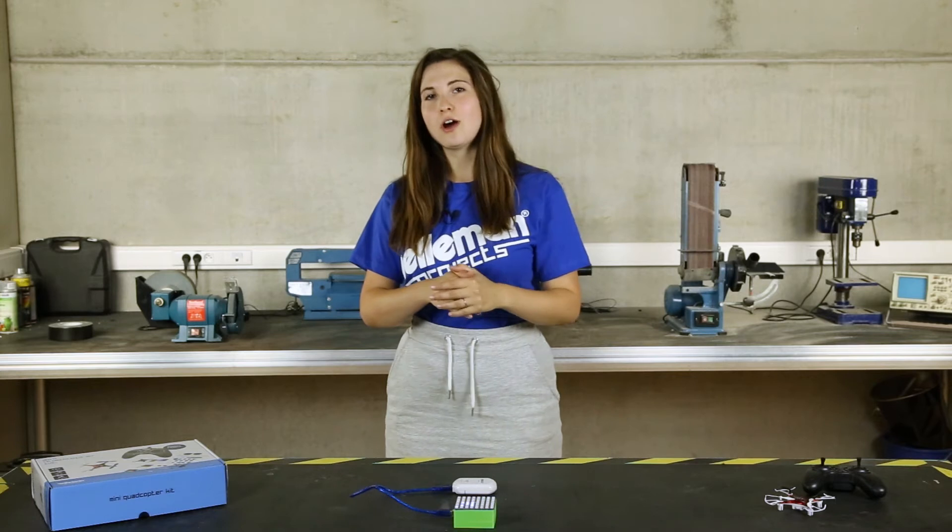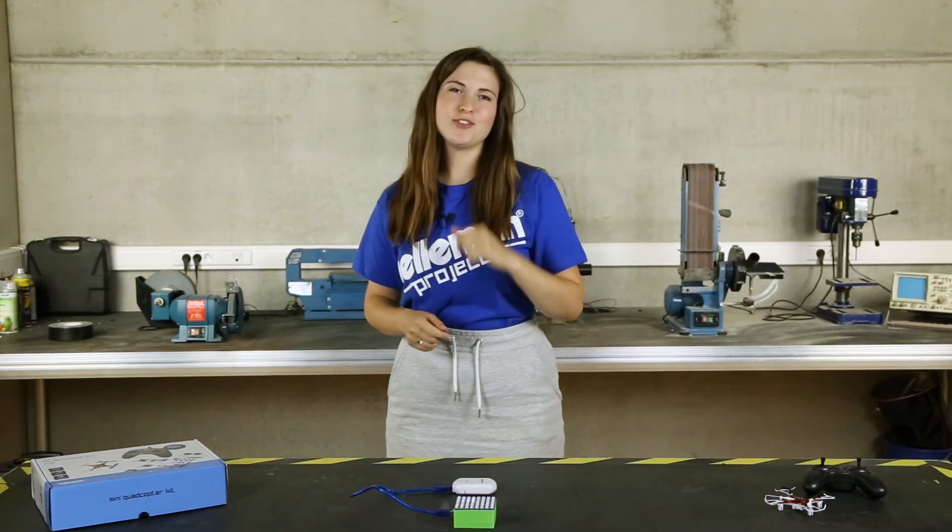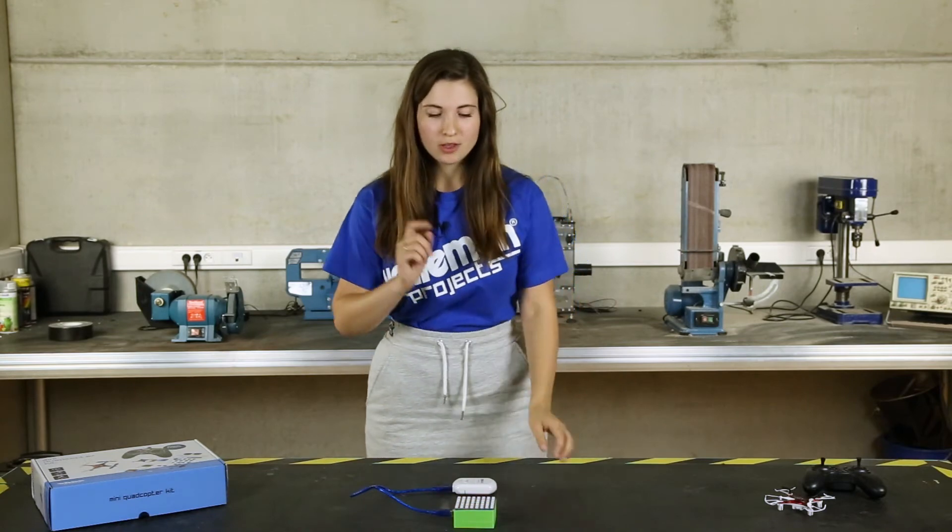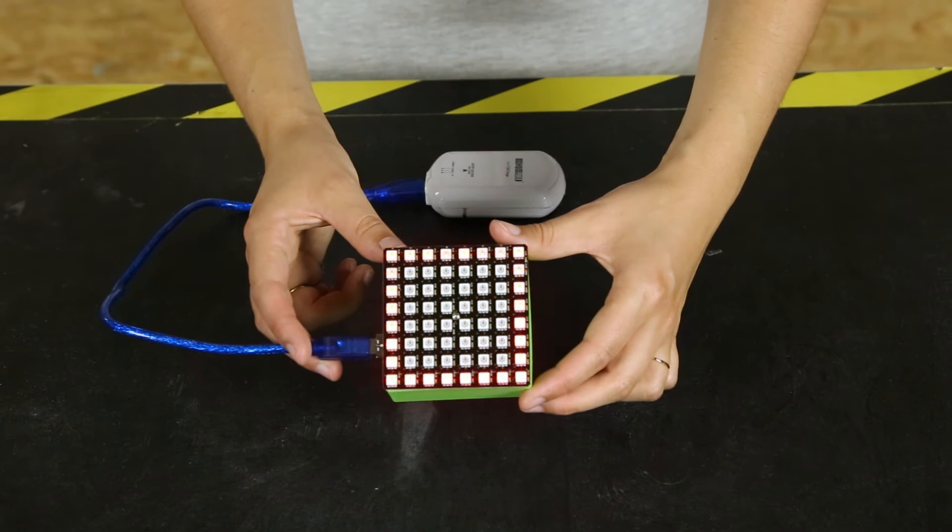Okay, so as you saw during our flight session we made our own landing platform and you can make it too. What do you need? You need the RGB LED matrix over here which is very bright and colorful.